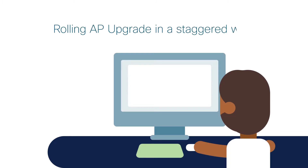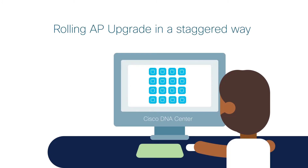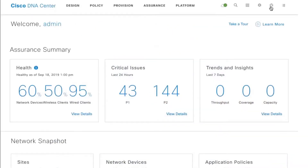In this video we're going to talk about a brand new feature within the DNA Center 1.3.1 called rolling AP updates, which allows a network administrator to upgrade the software running on your wireless LAN network in a staggered fashion, achieving a completely hitless software upgrade.